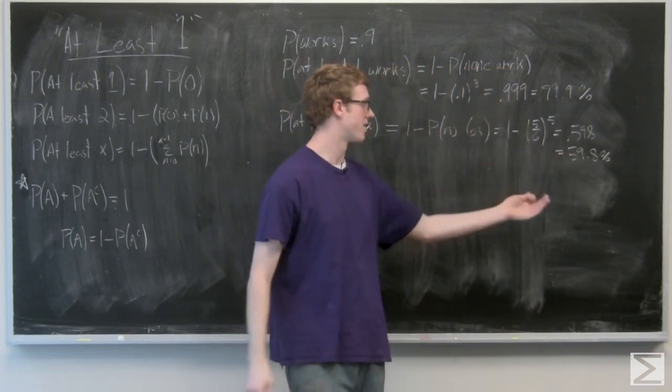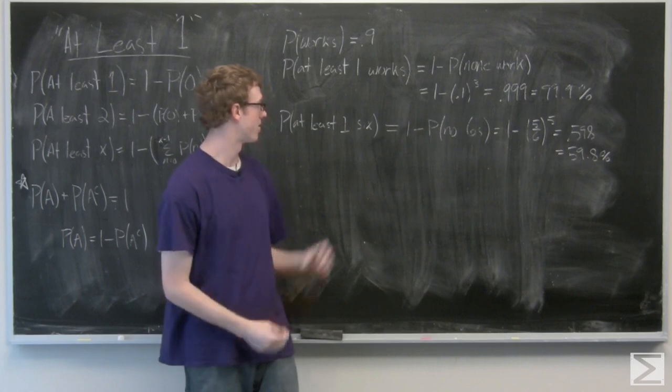You can leave your probability as that, or you can say that it's a 59.8% chance that we're going to get at least one six.